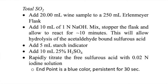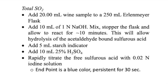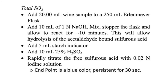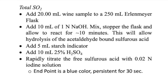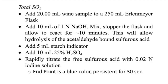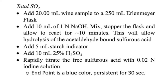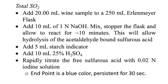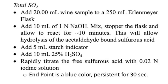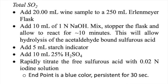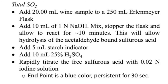For total SO2, add 20 mL of wine sample to a 250 mL Erlenmeyer flask. Add 10 mL of 1 normal sodium hydroxide, mix, stopper the flask, and allow it to react for approximately 10 minutes. This will allow hydrolysis of the acid-aldehyde bound sulfurous acid form. Then add 5 mL of starch indicator and 10 mL of 25% H2SO4. Rapidly titrate the free sulfurous acid with 0.02 normal iodine solution and look for the endpoint turning blue for at least 30 seconds.